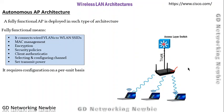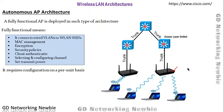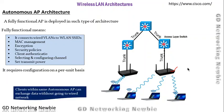This architecture requires configuration on an individual, per-unit basis. If we have two access points, we need to configure them individually because they are independent and self-contained. Clients on the same autonomous access point can exchange data without going to the wired network — the traffic can flow directly between nodes without traversing the wired network portion.